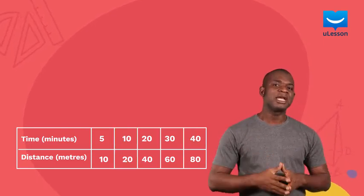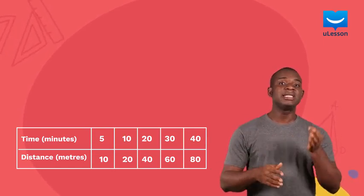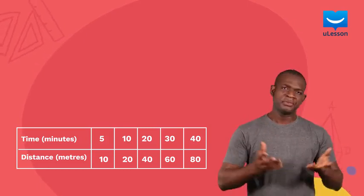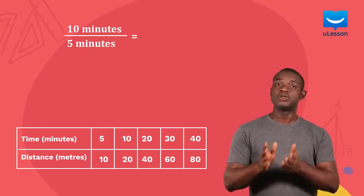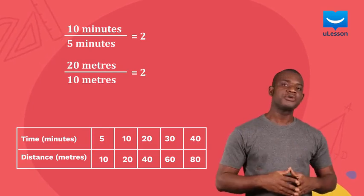From this analysis, we can see that the ratio of any two distances is the same as the ratio of their corresponding times. For example, 10 minutes over 5 minutes is 2, and 20 meters over 10 meters is also 2.